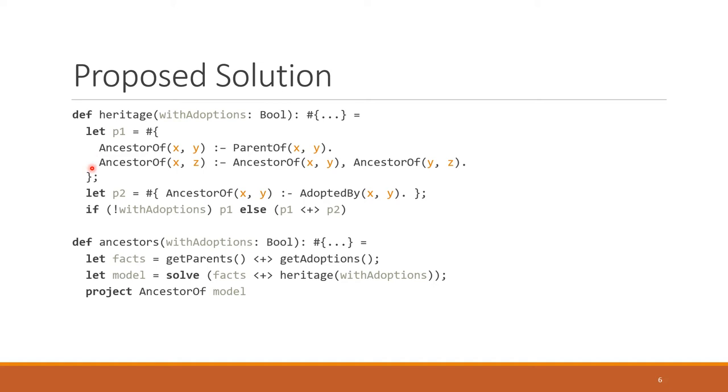I have a local variable here, p1, that contains the rules for biological parents. And I have a local variable p2 here, that contains the rules for adoption. And then depending on this boolean, either I'm going to return the original program, or I'm going to return the original program plus the rule that accounts for adoptions, so the union of the two programs.